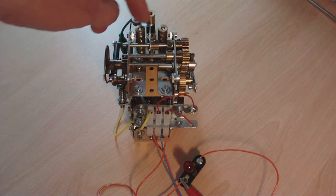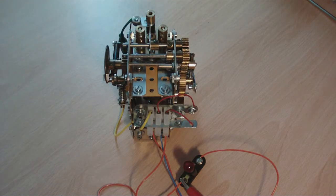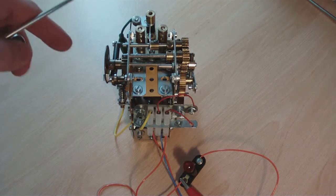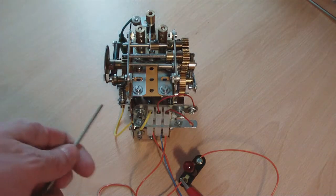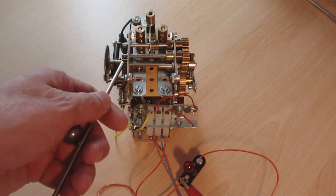To do that it makes an electrical contact which starts a motor at the back. The motor has two functions. Firstly, it disengages a pawl here from this ratchet wheel.